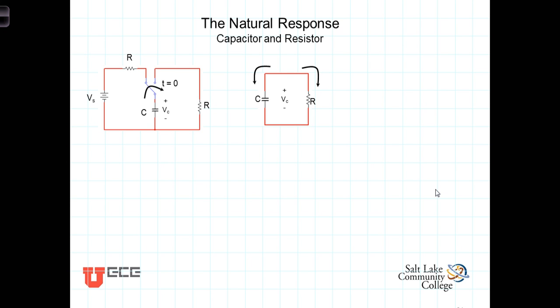Let's now consider the natural response of a capacitor and resistor, or a circuit that contains a capacitor and a resistor. As we talked about before, the capacitor was in this circuit here, it was charged up to some initial voltage. In this case we're going to refer to the initial voltage as V0, and V0 is just equal to the source voltage.